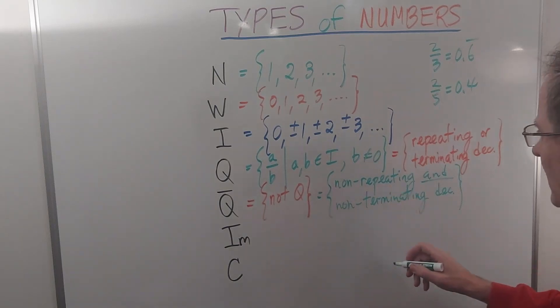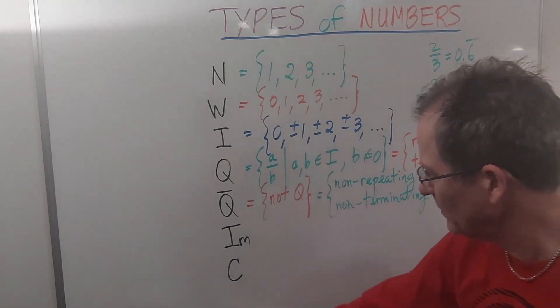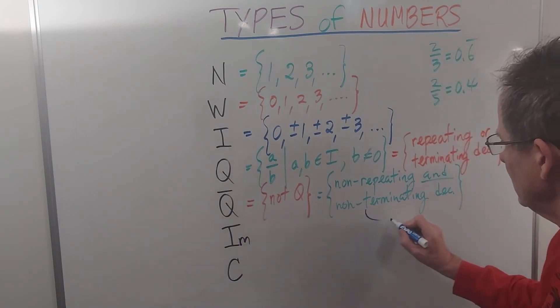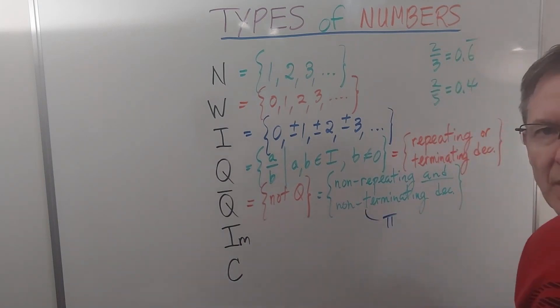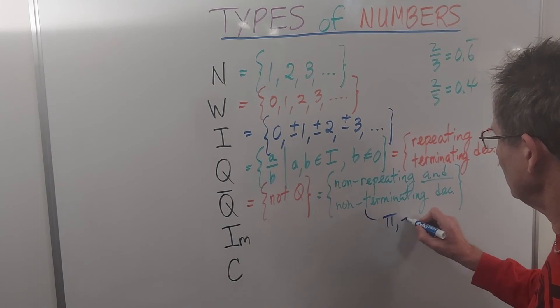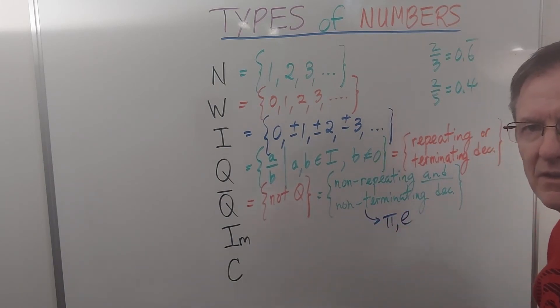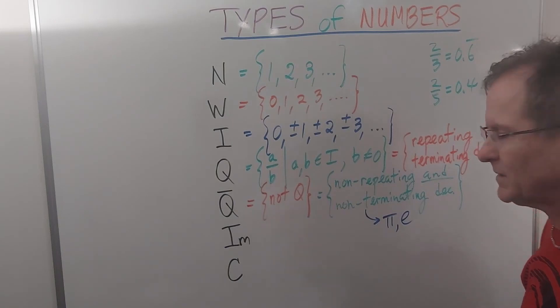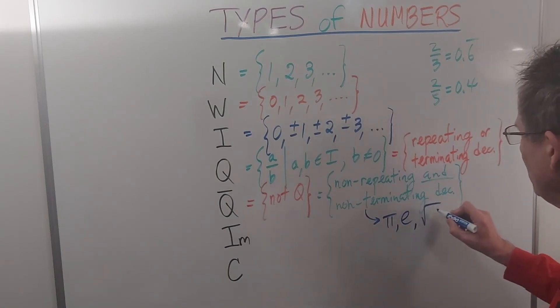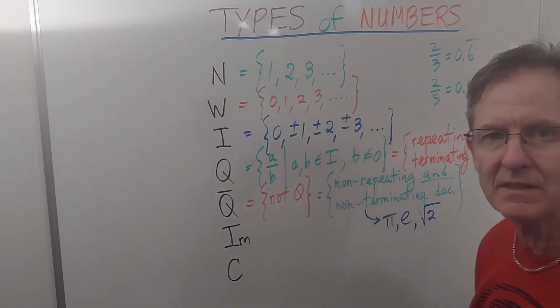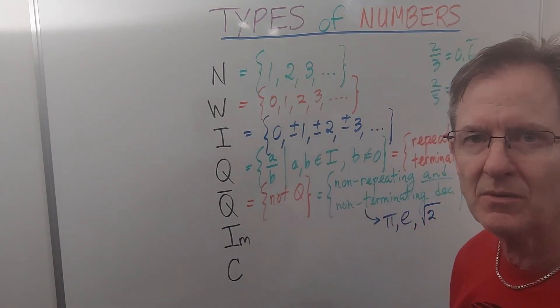The non-repeating, non-terminating decimals, for example, are numbers like pi, 3.14, etc. Euler's number e, I've recited both of those in previous videos to hundreds of decimal points. The square root of numbers that are not perfect squares like 2, for example, and so on and so forth.